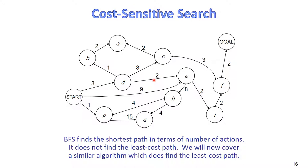We covered DFS, BFS, and iterative deepening last time. We saw that they are different in making decisions about which state would be taken off the fringe. What is common between all three is that we didn't consider the cost of every step at all — we assumed that the cost is one or constant.